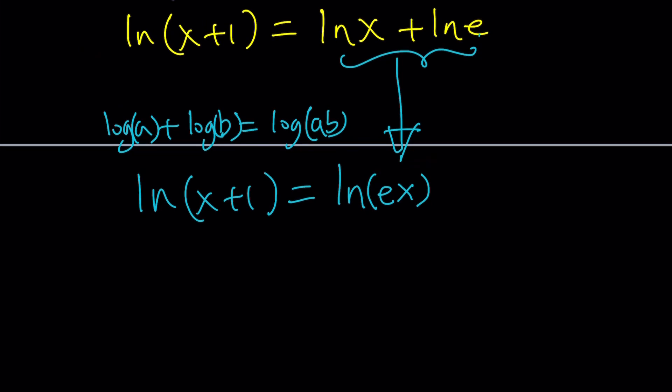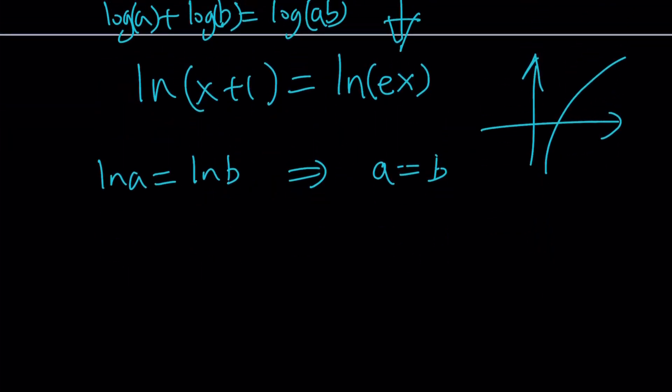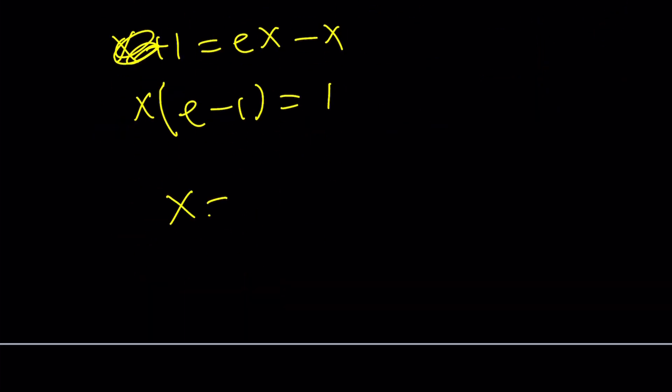And then, we have ln's on both sides, we can do e to the power of both sides, or if ln(a) is equal to ln(b), that implies a equals b. Because ln function is 1 to 1, it's an injection, so on and so forth. So what do we get? We get the equality: x+1 is equal to ex as before. And then from here, you do the same thing: ex - x equals 1, and then you factor out x, and you get x(e-1) equals 1, and finally, x becomes 1/(e-1). And I think we said that this is about 0.582.